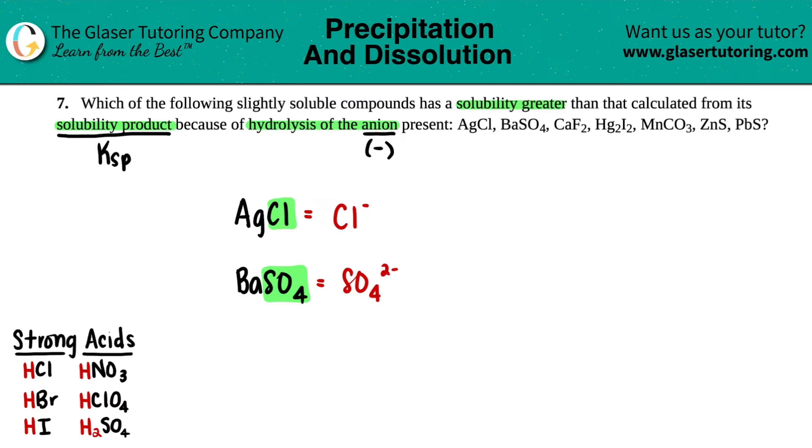This one is the polyatomic: SO4, that's sulfate. So SO4 is the polyatomic here and SO4 always has a negative two charge. Let's keep going. We got CaF2. The anion for CaF2 would be the fluorine, right?